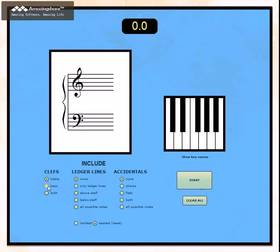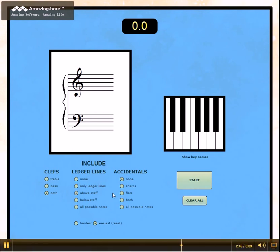So I'm going to hit clear all and now I'm going to try both clefs, above the staff, and I'm going to include both kinds of accidentals on that.